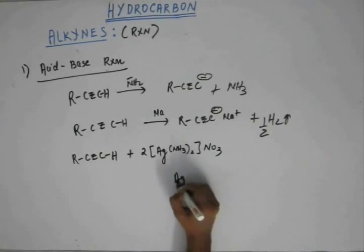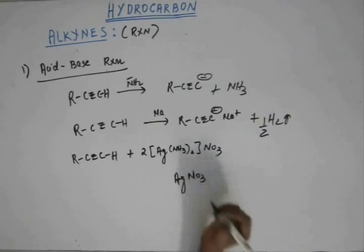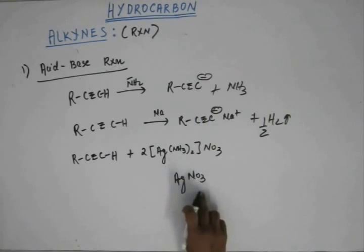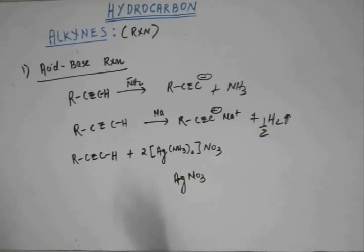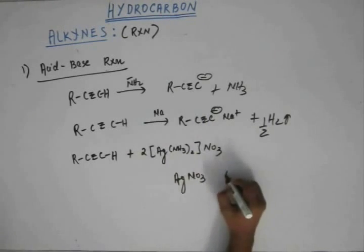Now when you take silver nitrate—silver nitrate is AgNO3—and when you add ammonia to this, then you will study in the chapter of coordination compound that silver has a great affinity towards ammonia for forming a complex, and this is the complex that silver forms.